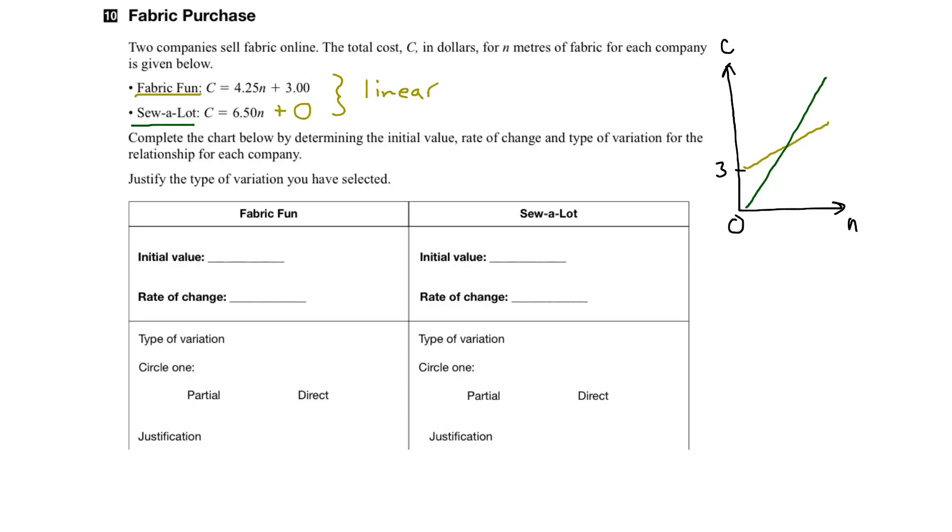Okay, let's now go ahead and fill in our chart. So, for FabricFun, we have an initial value of 3, and a rate of change of $4.25. So, we can write it here. Initial value of 3, rate of change is $4.25 per meter.